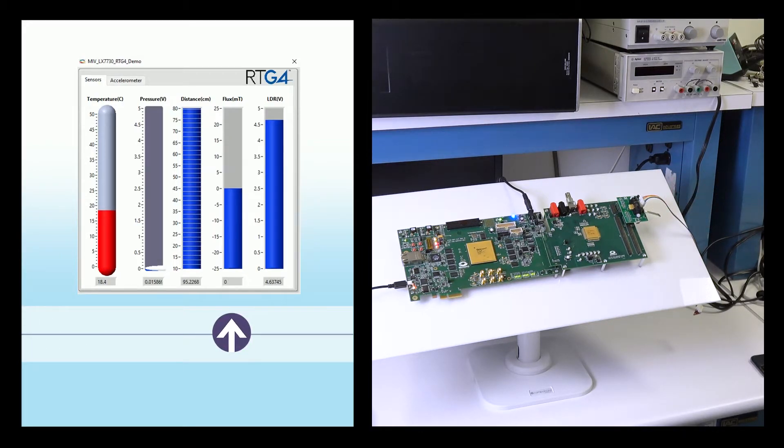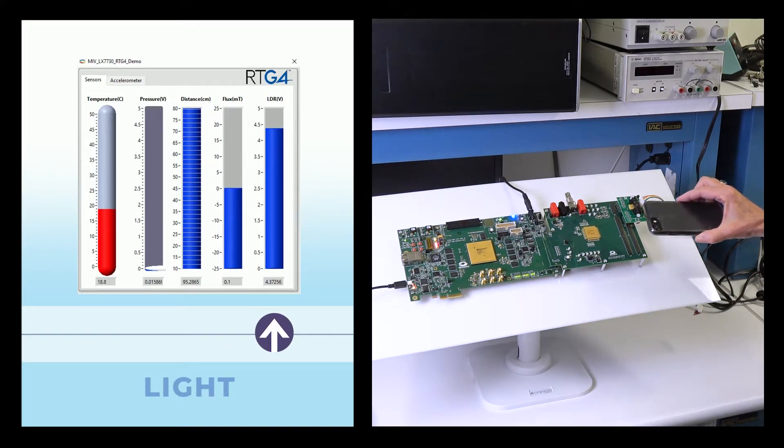Finally we have the light sensor, which is over here. What I'm going to do is block the light - I'll place my phone over that sensor, and you can see the reading changing for that light sensor measurement.